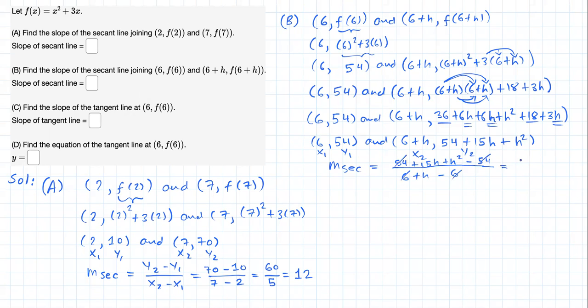Notice that 54-54 is zero, 6-6 is zero. So simplifying this, I should get this expression (15h+h²)/h. Now, dividing h into 15h is just 15, plus h into h² is just h. So that should be the answer for part B.